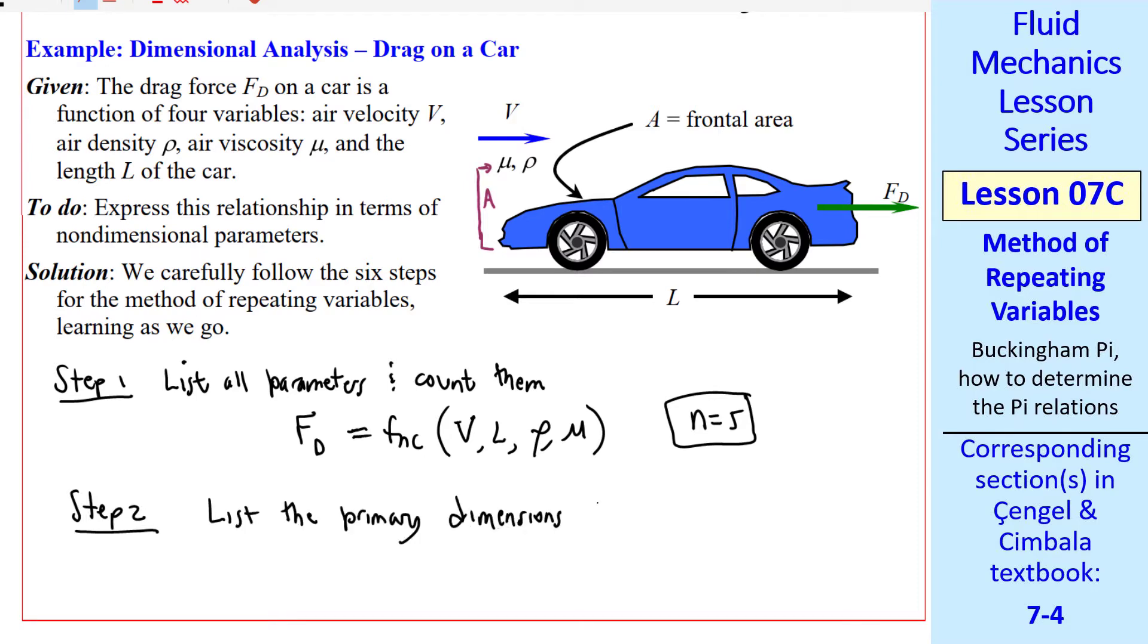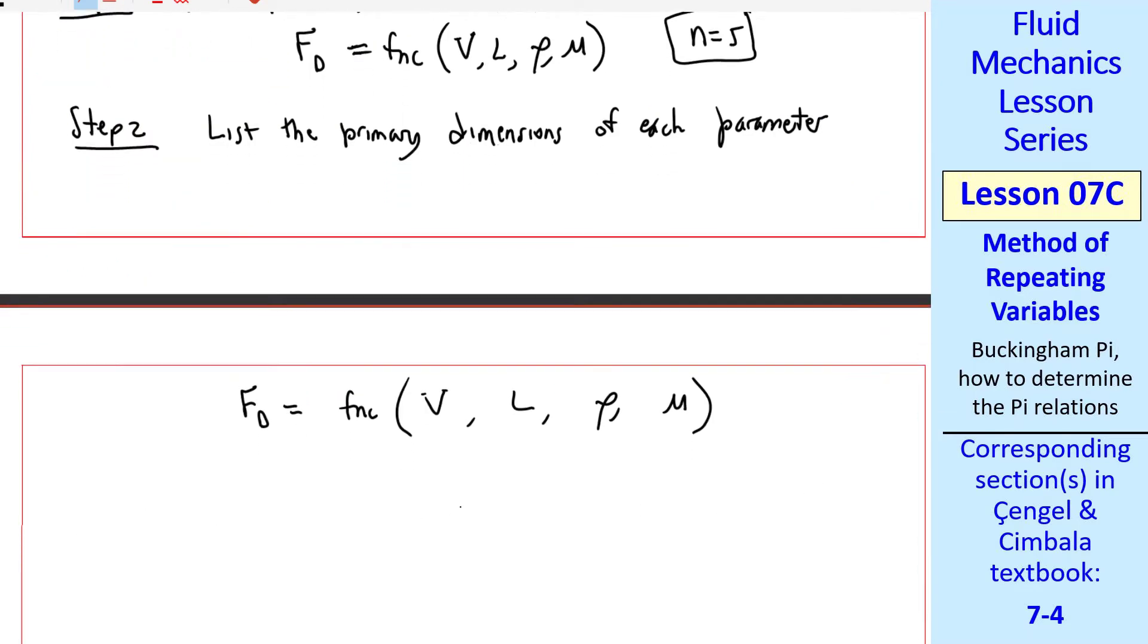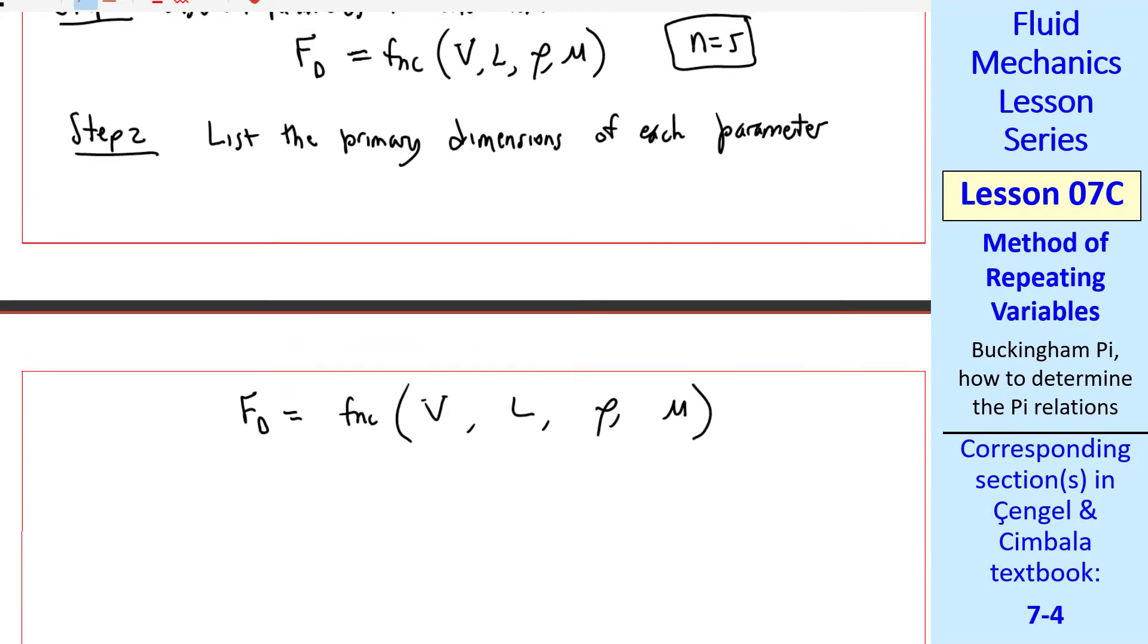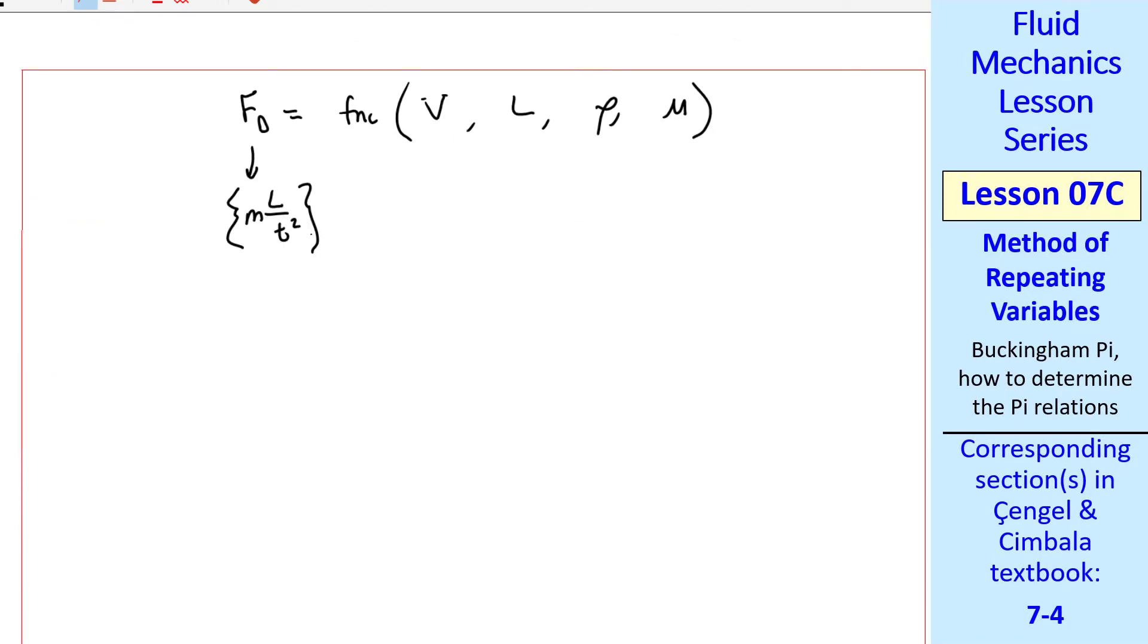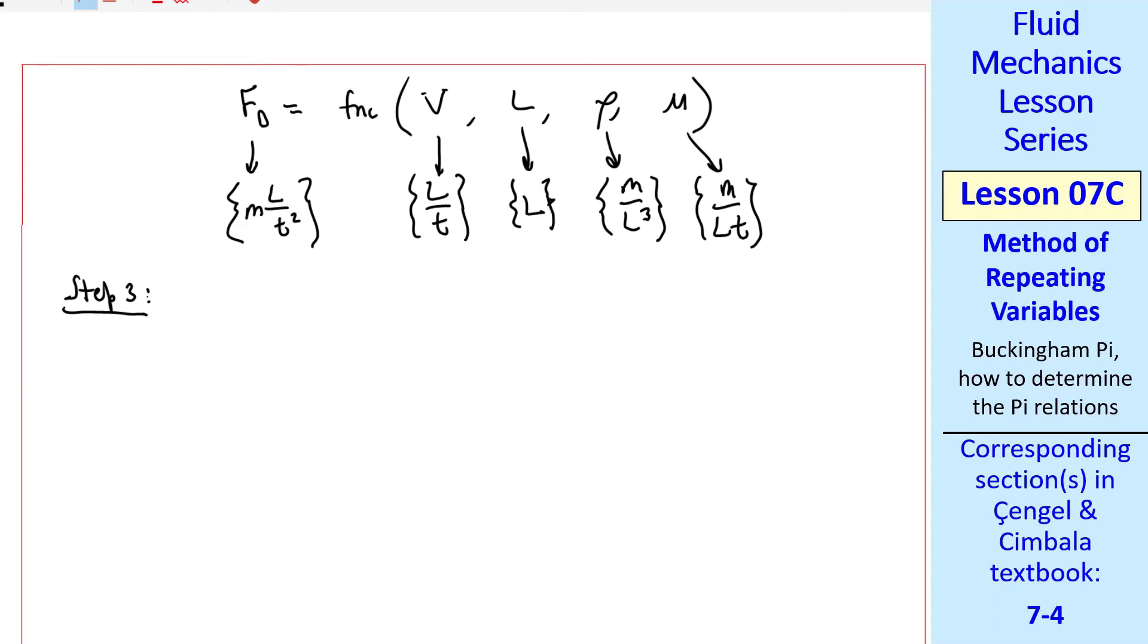Step two: list the primary dimensions of each parameter. I got into the habit of writing these right below our functional relationship, which I repeat here. Force has primary dimensions of ml over t squared. For v, it's l over t, length is just l by itself, rho is m over l cubed, and viscosity is m over lt. That's all we do in step two, but it's critical. If you get one of these dimensions wrong, everything will be wrong in your answer. Step three is to guess the reduction, which we call variable j. Here we only have m, l, and t as primary dimensions. There's no capital T or any of the other seven primary dimensions. So we guess j equals three, since there are three primary dimensions.